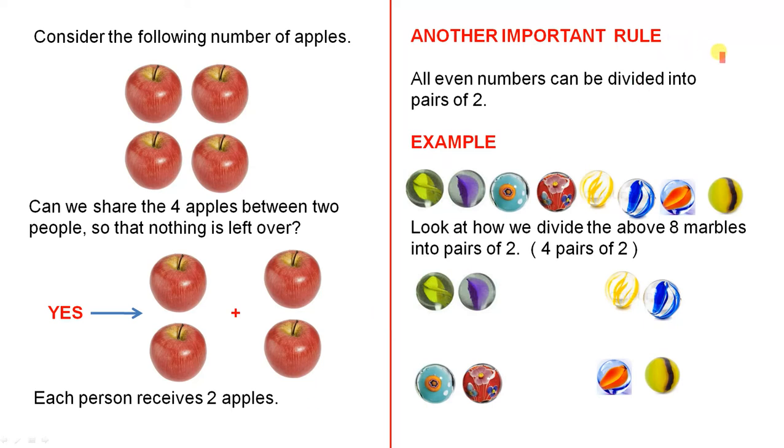Another important rule. All even numbers can be divided into pairs of two. For example, here we have eight marbles. Look at how we divide the above eight marbles into pairs of two, that is four pairs of two.